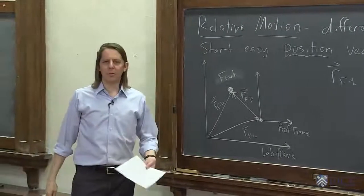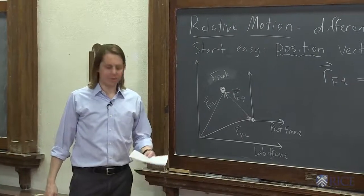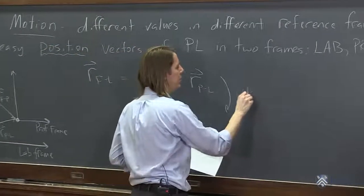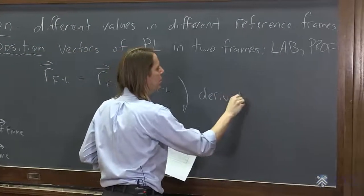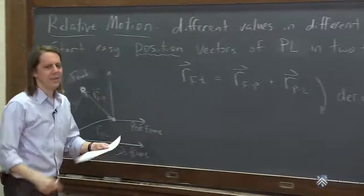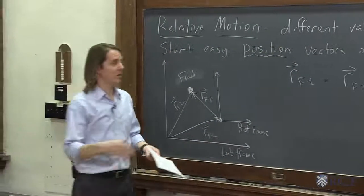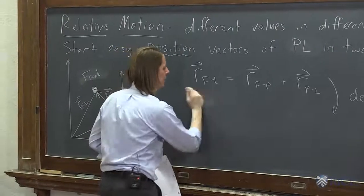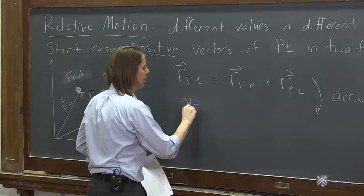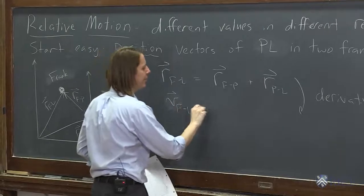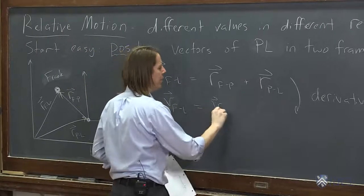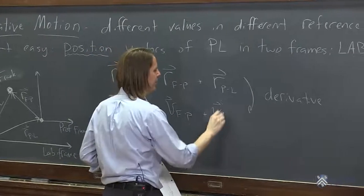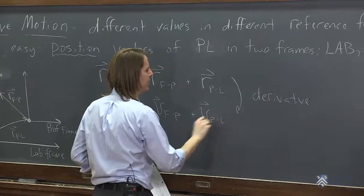But most of these problems don't involve positions. They involve velocities. You want to think about velocity. Well, guess what? All you've got to do is take a derivative. And if any of these things start moving in time, or if they all start moving in time, this just becomes their velocities. The velocity of Frank in the lab frame is equal to the velocity of Frank in my frame, the professor frame, plus the velocity of me, the professor, in the lab frame.